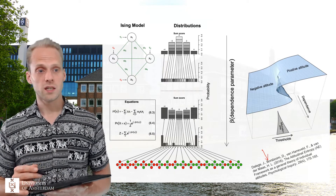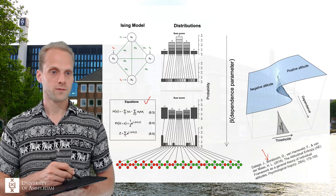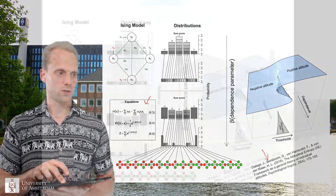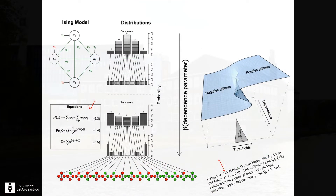And he did this with the Ising model. He used the Ising model to formalize the theory for attitude formation. Rather than stating the Ising model changed in the density or connection strength, he used this one parameter that we've so far ignored: the beta parameter, which is the inverse temperature. The higher beta, the more frozen the system is; the lower beta, the more hot the system is.